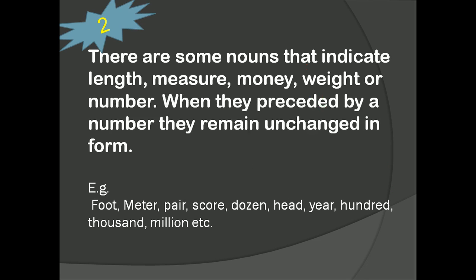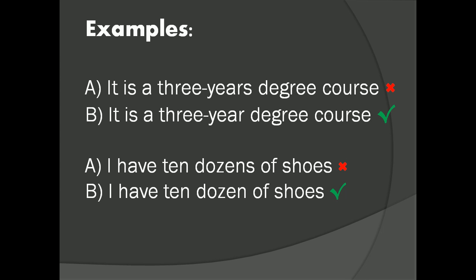For example, where is my trousers? We should not say like this. What would be the correct one? Where are my trousers? The second example is, spectacles is now a costly item. What would be the correct one? Spectacles are now a costly item.